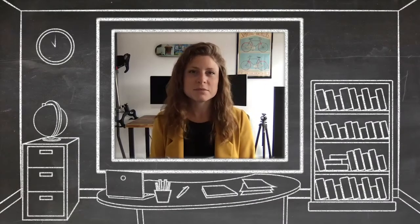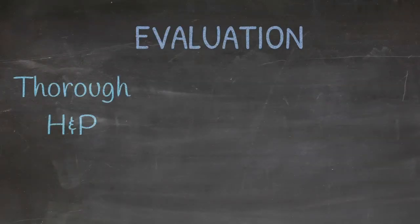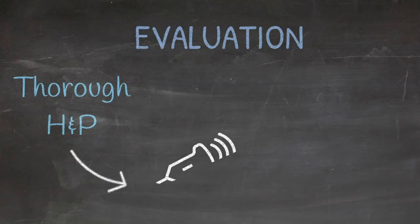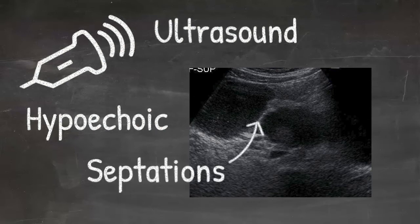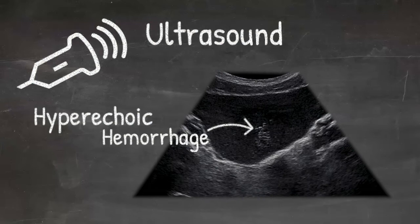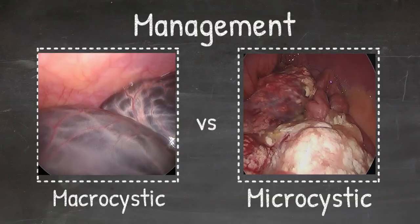How would you work up a patient with an asymptomatic abdominal mass and distension? The history and physical is really important to get some sense for how long the mass has been there and any other symptoms associated. When we think about imaging, ultrasound is usually our first choice. You might see a hypoechoic cystic mass on ultrasound with some internal septations or small hypoechoic foci within the cyst related to hemorrhage. It's important to use imaging to give you information about the origin of the cyst and whether it's macrocystic or microcystic, because that might change your treatment approach.